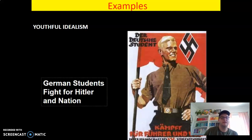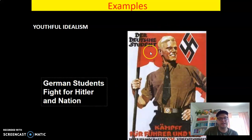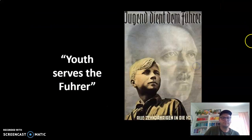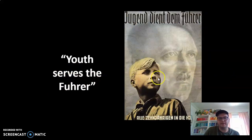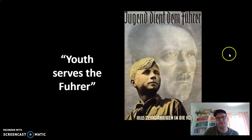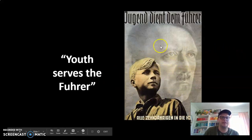This is German students — it says 'German students fight for Hitler and nation.' And again, we have this image of the Aryan race: white skin, blonde hair, blue eyes, which Hitler and the Nazis saw as the perfect race. It's like a white supremacist ideal of the white Northwestern European male. It says 'Youth serves the Führer' — Führer means leader. And you have people from the Hitler Youth, which is kind of like a Nazi Boy Scouts. If you've ever seen the movie Jojo Rabbit, that movie kind of deals with that in a comedic way.